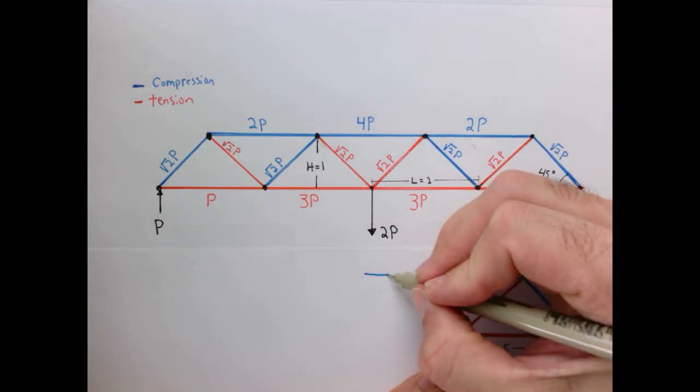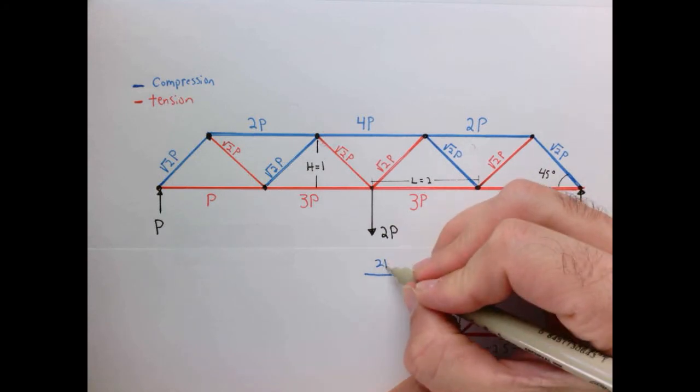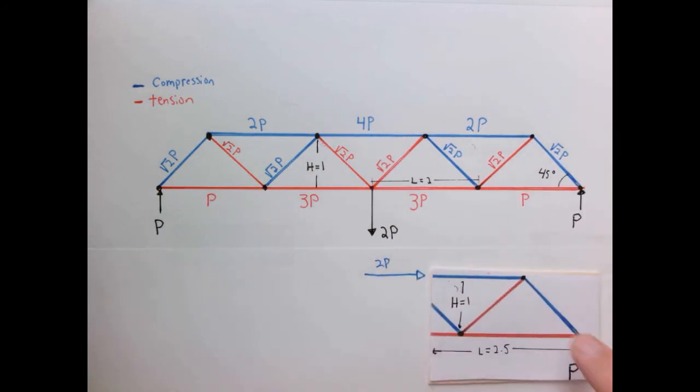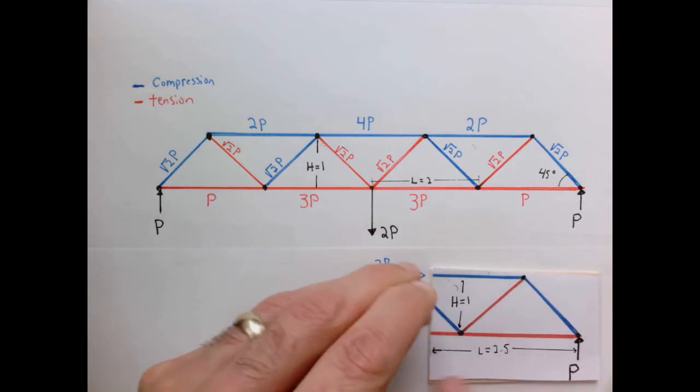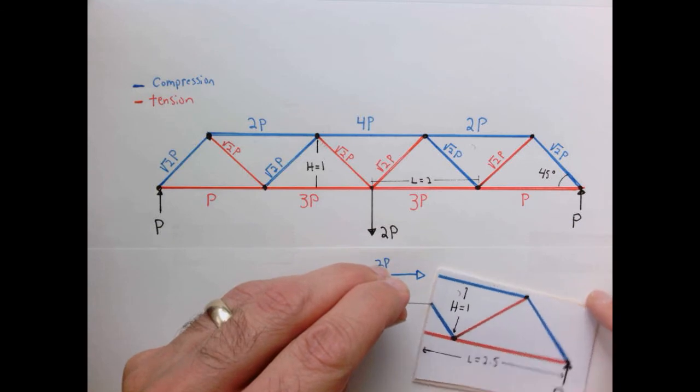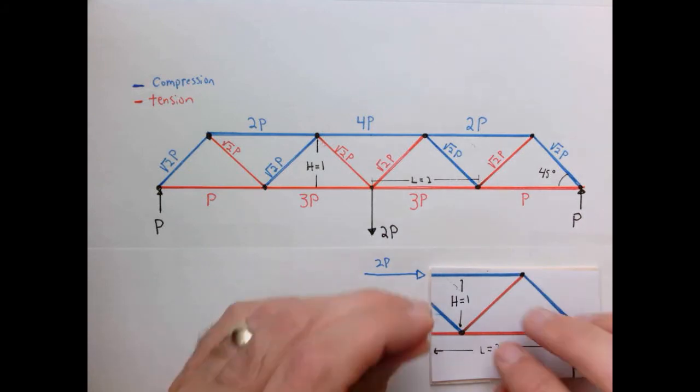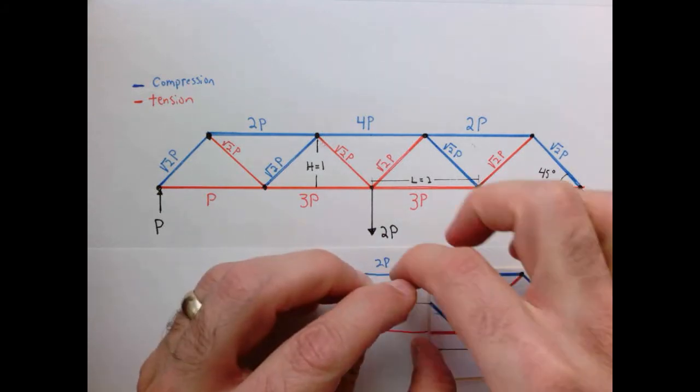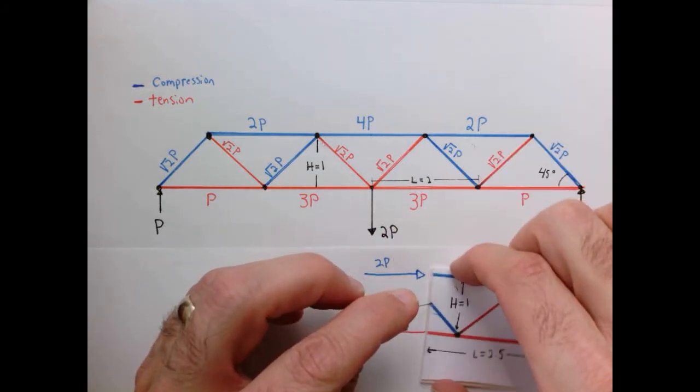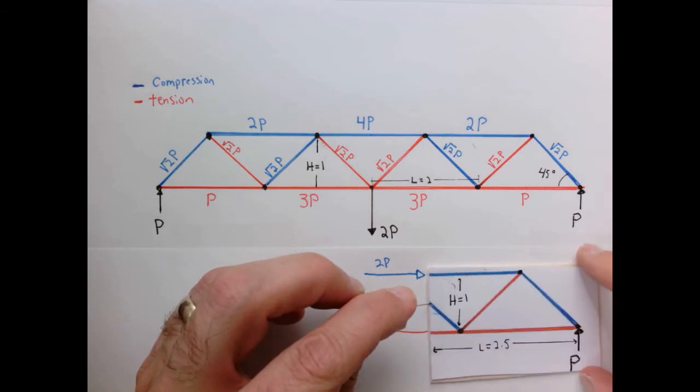Therefore the compressive load of 2P in this member here is pushing in that direction to counterbalance the force here. So we have a compressive force in the upper member of 2P pushing in that direction. We also have a tensile force which will be pulling in this direction, which also causes a rotation that way. So we can start to see that the upper and lower members are exerting a force couple that causes a rotation in this direction, which is counterbalancing the rotation in this direction.